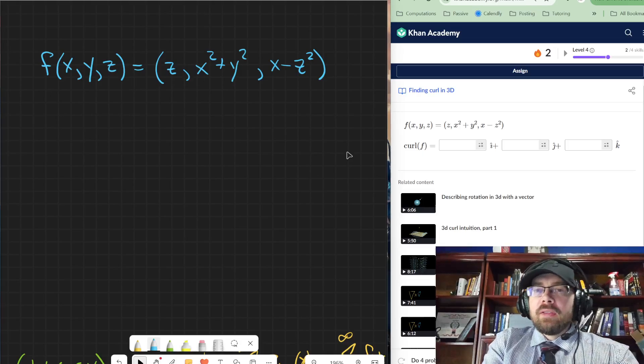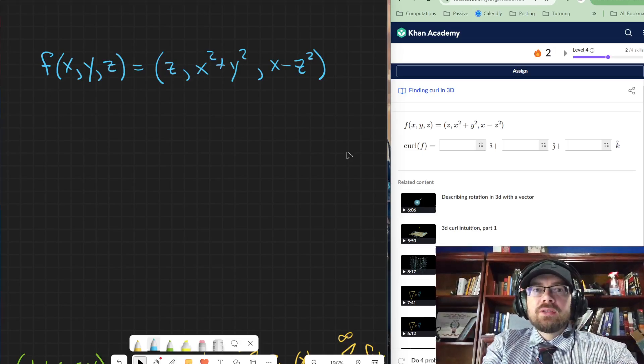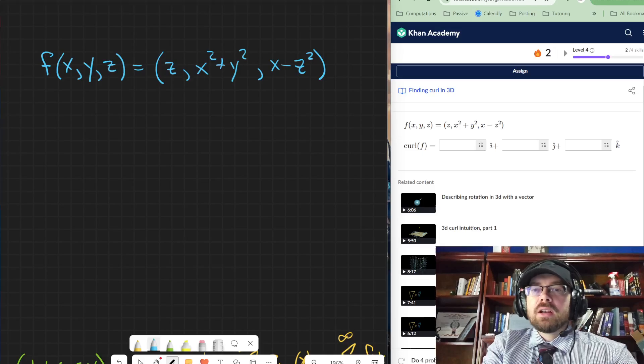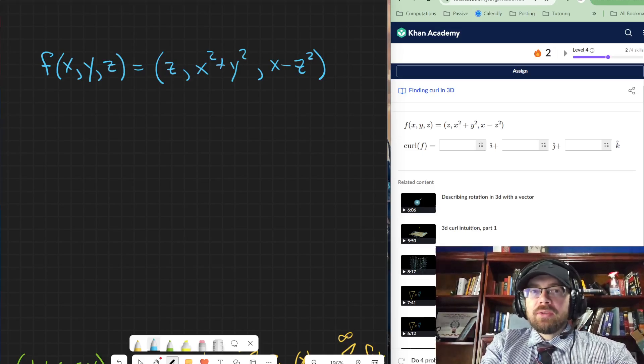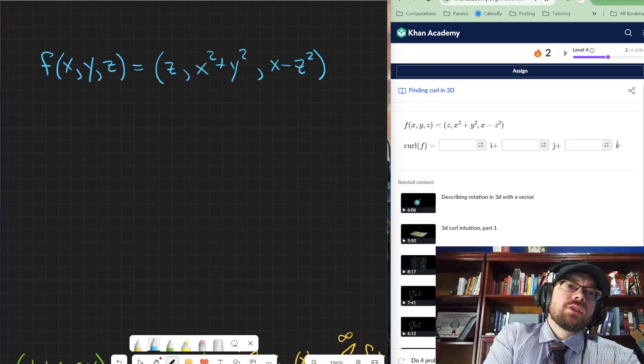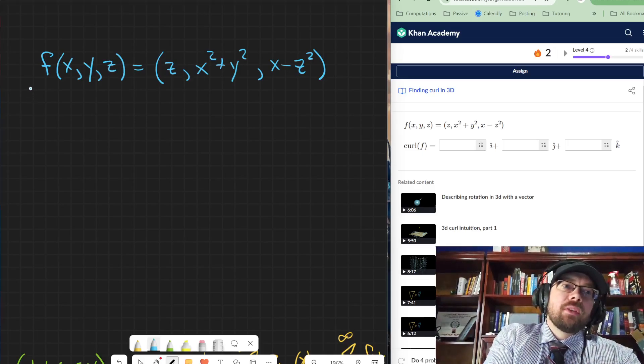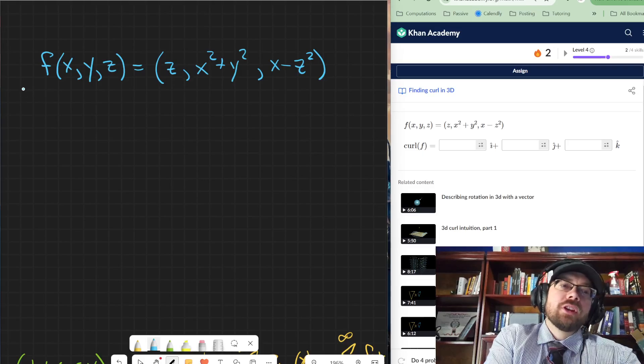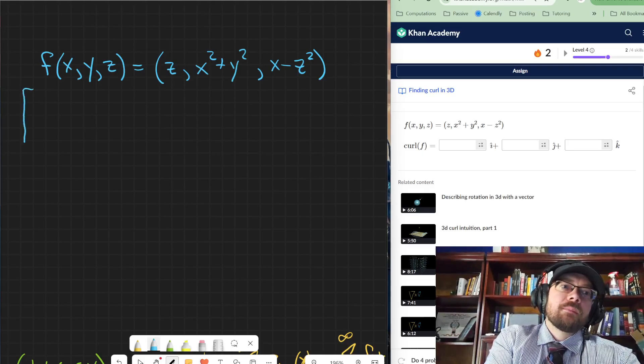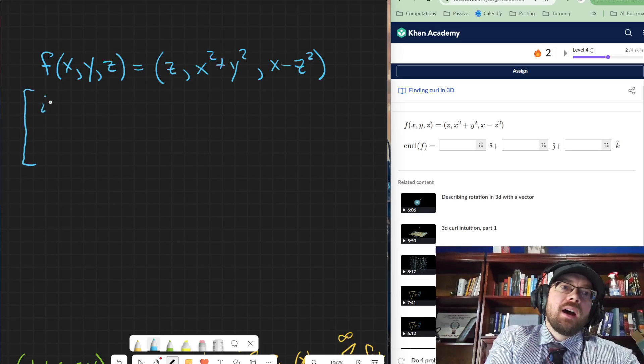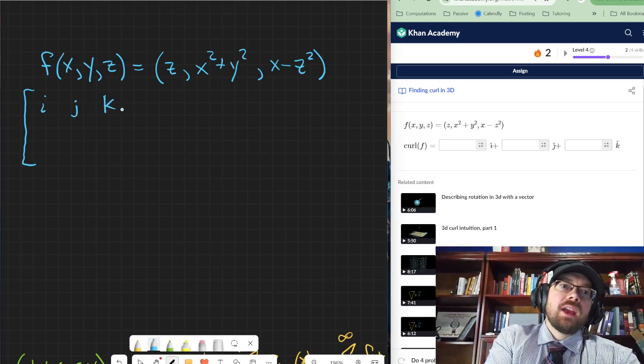So in order to find the curl when we're in three dimensions using three different letters here, we basically do a determinant of a three by three matrix. So the formula for the curl of the function comes from you have the i, the j, and the k vector.